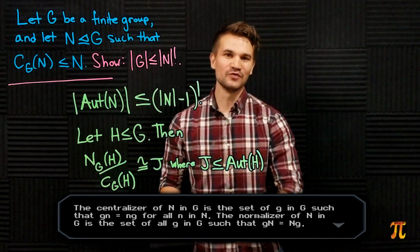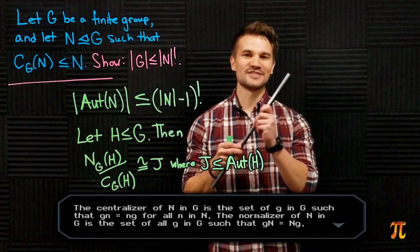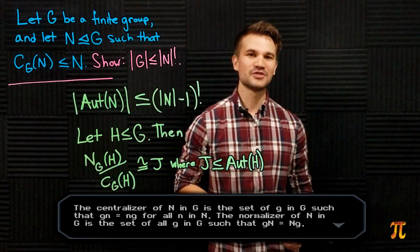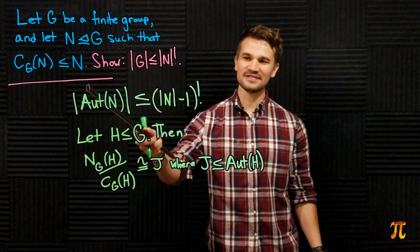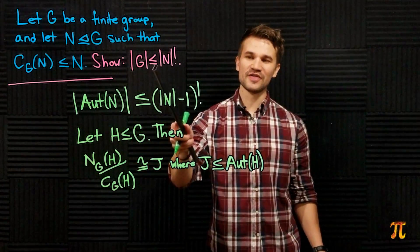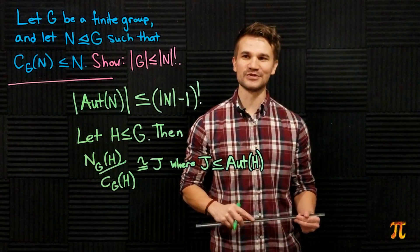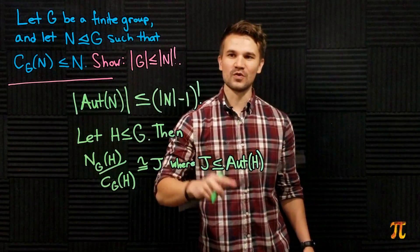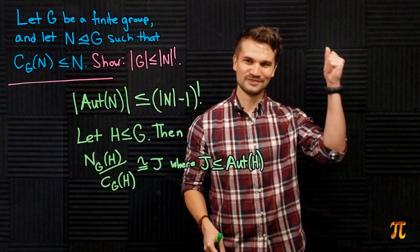I claim these two facts are precisely what we need to prove this statement. I'll give you a chance to pause the video so you can attempt to use these two facts to show that the order of G is less than or equal to the order of N factorial.